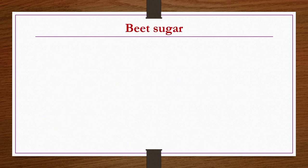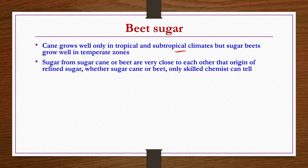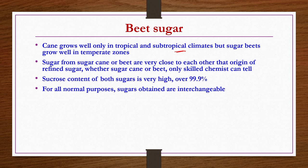Now we will be discussing about beet sugar. Why do we need to study beet sugar when we have the option of sugarcane? Because sugarcane is produced only in tropical or subtropical environments, but sugar beets grow well even in temperate zones. Furthermore, sugar produced from sugarcane and from beet is very similar — only a professional chemist can determine whether a given sugar is derived from sugarcane or from beet. Their sucrose content is also very high, and they can be used interchangeably without difficulty. Because of such reasons, it is necessary to discuss production of sugar from beet as well.